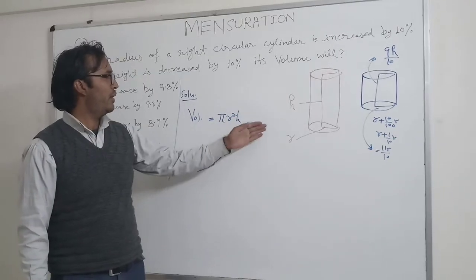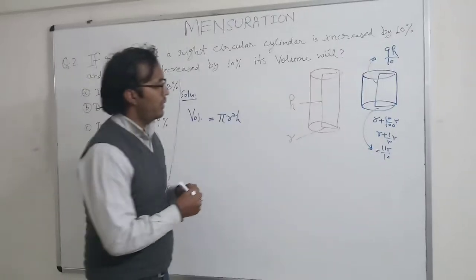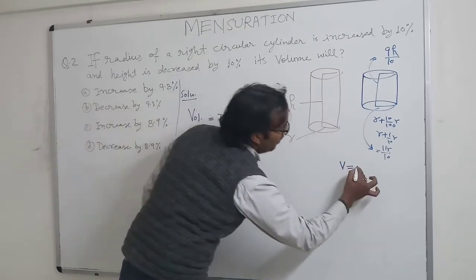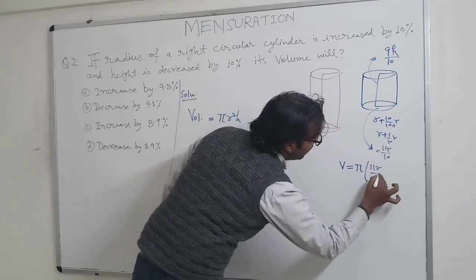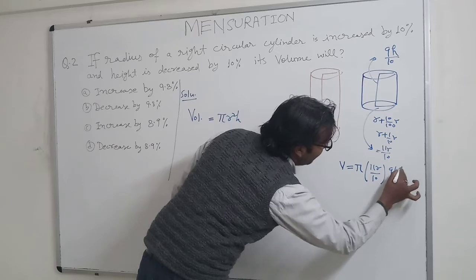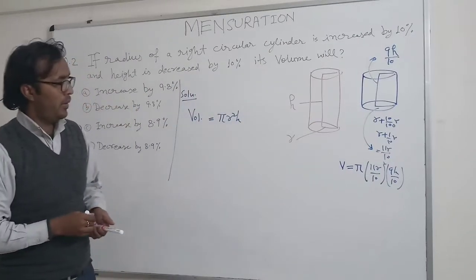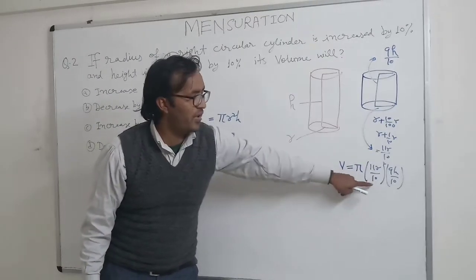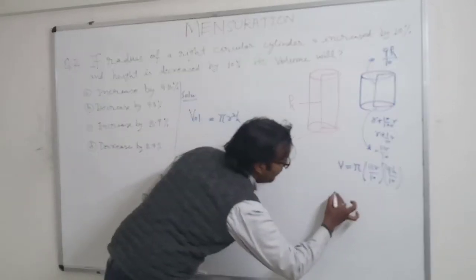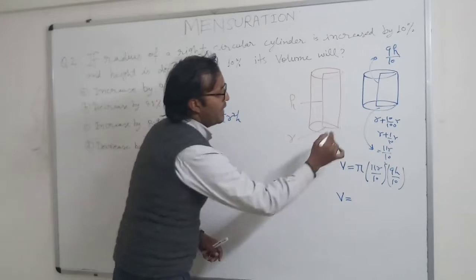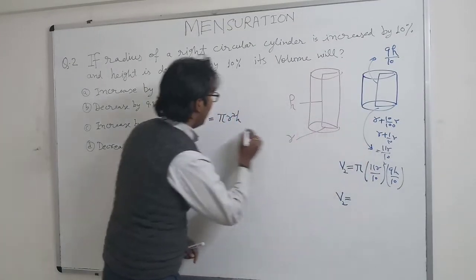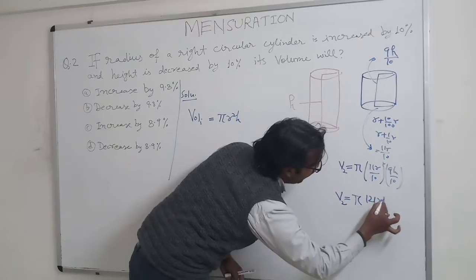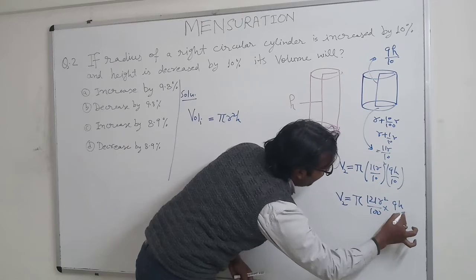For the original case the volume is πR²H. In the other case, the volume of the modified cylinder V2 = π × (11R/10)² × (9H/10). This is the volume of the cylinder with increased radius and decreased height. When we solve it, this becomes π × (121R²/100) × (9H/10).